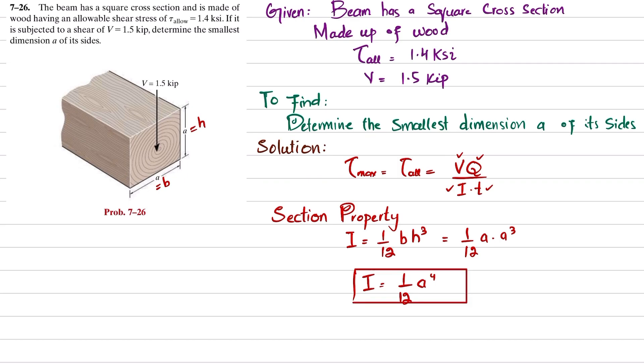Now we will find Q as well. So we know that Q is equal to ȳ·A. Now first, its neutral axis will be this one. And this distance will be equal to a/2 and this will be also a/2. Total height will be equal to a.